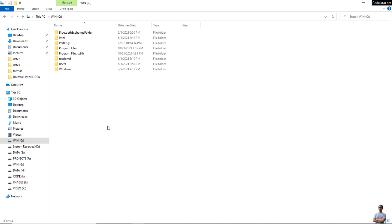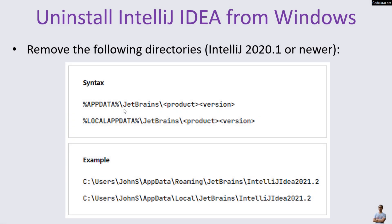Note that to completely uninstall IntelliJ IDEA you need to check and remove the following directories. For IntelliJ IDEA version 2020.1 or newer, in the AppData directory under JetBrains and the product name and version number.